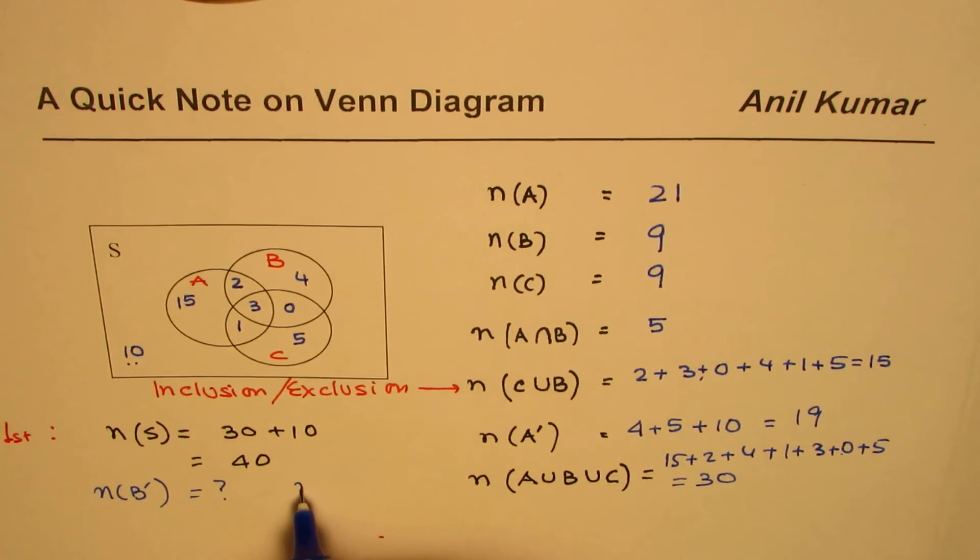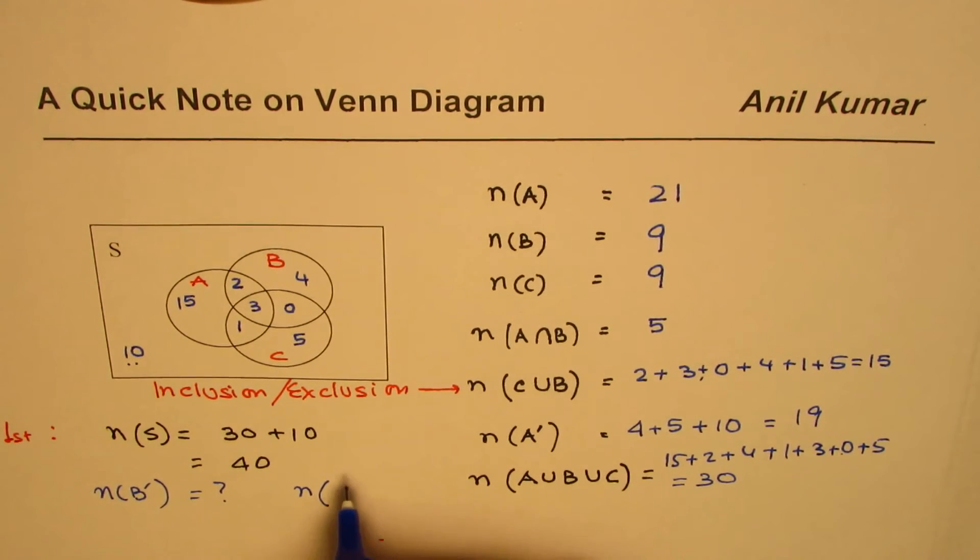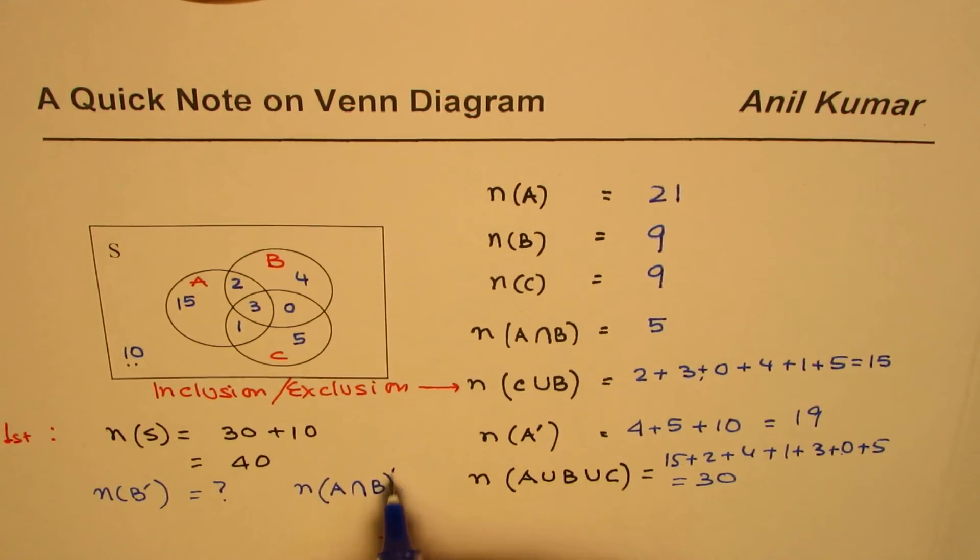Not in, I should say, A intersection B. So how many are in A intersection B, which we did? Not in A intersection B. Let me write like this: not in A intersection B.